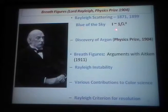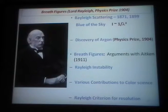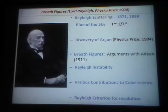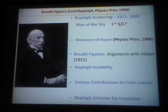Lord Rayleigh also spent a lot of time on color science, contributing to the explanation of the blue of the sky being one over lambda to the fourth. He was the discoverer of Argon, for which he won the physics prize in 1904. He spent a lot of time thinking about breath figures — if you have a hot cup of coffee or breathe on a glass, you have breath figures, nothing but water droplets that condense on a cold surface. This also led Charles Thomas Rees Wilson to invent the Wilson cloud chamber that won him the Nobel Prize.